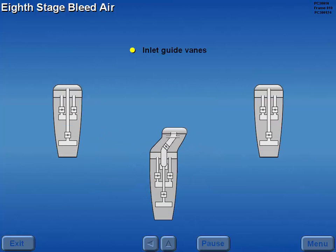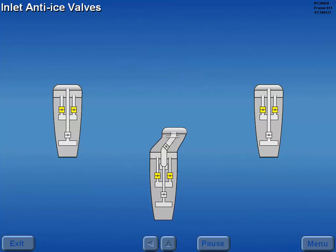Engine anti-ice protection for the inlet guide vanes, nose dome, and PT-2 probe is provided by 8th stage bleed air. The left and right inlet anti-ice valves on each engine control 8th stage bleed air flow. Either valve is capable of supplying adequate inlet anti-icing.